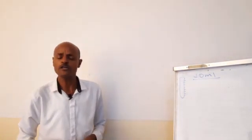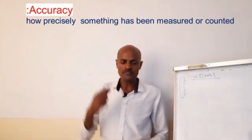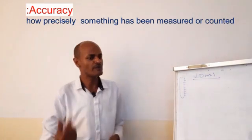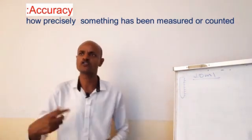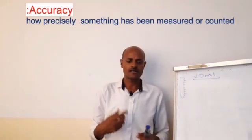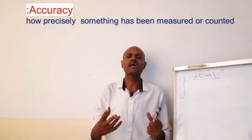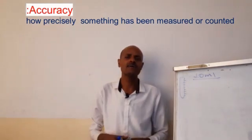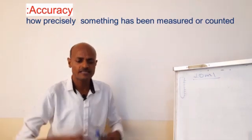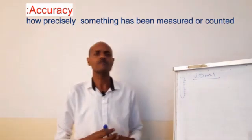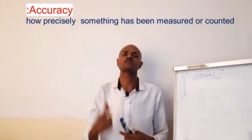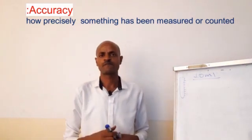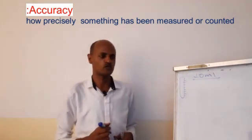Accuracy is defined as how precisely you measure something or count something. Accuracy is based on the idea of closeness.